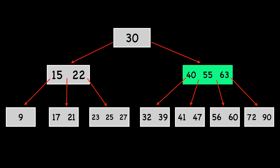The keys in each node dictate the value of the keys stored in each subtree. For example, the keys in this subtree have values less than or equal to the leftmost key, which is 40. Similarly, the keys in this subtree have values greater than or equal to the rightmost key, or 63. Likewise for the other two subtrees.